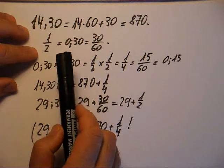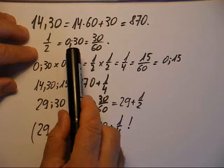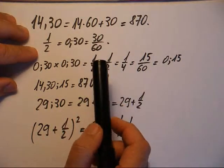Puis, 1 demi, la fameuse moitié de 1, c'est 0,30, c'est-à-dire 30 sur 60. C'est vrai, ça fait 1 demi.